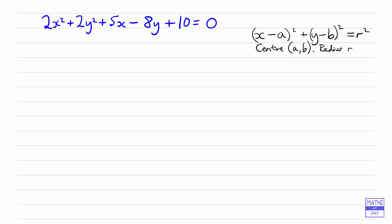So we can see that we don't want to have any numbers multiplying the x squared and y squared so the first thing to do is to divide through by 2. So that will give us x squared plus y squared plus, and here we will need to halve the 5 so we'll leave that as 5 over 2, so 5 over 2x and then minus 4y plus 5 is 0. Okay, so that's the first stage.